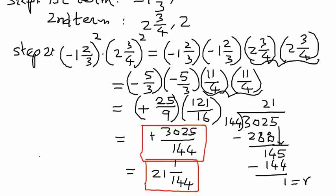We applied the steps: first, identified the base term and exponential term; second, applied the concept and simplified the math; then expressed the answer as an improper fraction and as a mixed fraction — both are correct. In my next presentation, we shall see how to simplify exponents containing variable expressions.